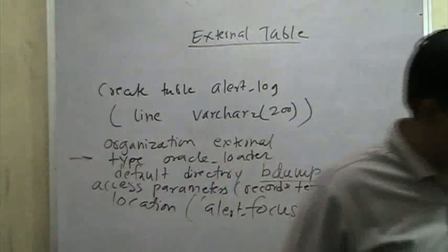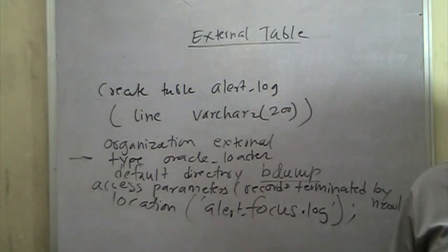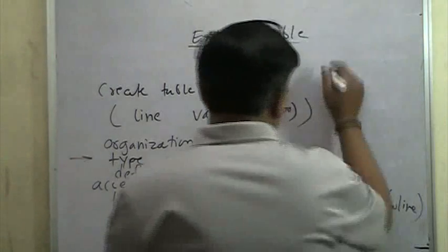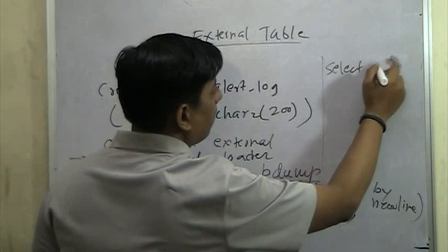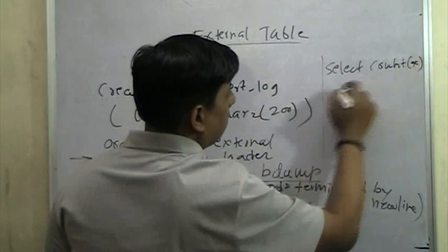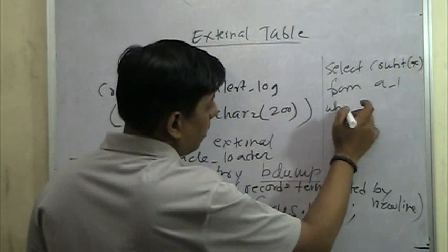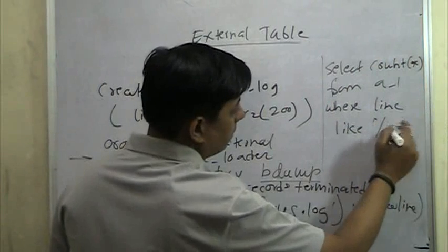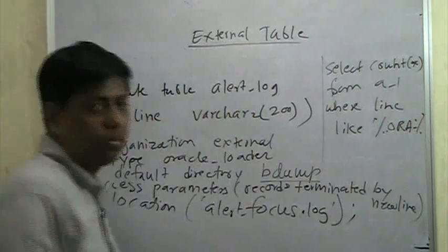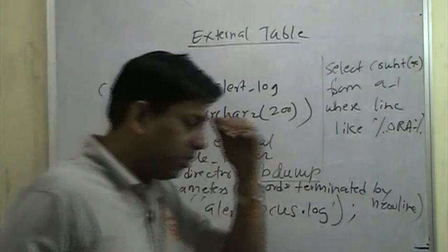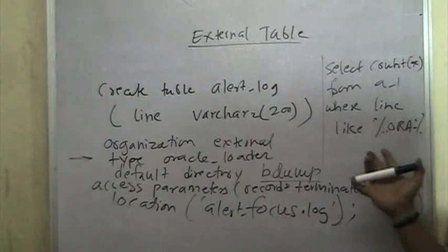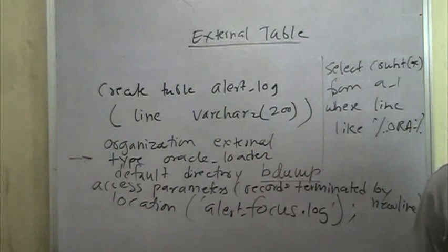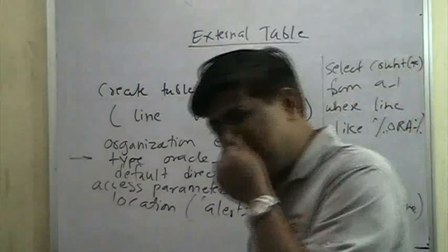You can then write SQL statements like: SELECT COUNT(*) FROM alert_log WHERE line LIKE '%ORA-%' — which gives you all error messages. Or you can search for specific errors like deadlocks or 'unable to extend temp tablespace'. This kind of analysis can be done very quickly by writing SQL statements instead of Unix grep commands. This is a great use case for DBAs, and external tables are also heavily used by developers.